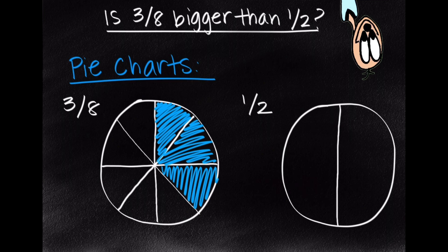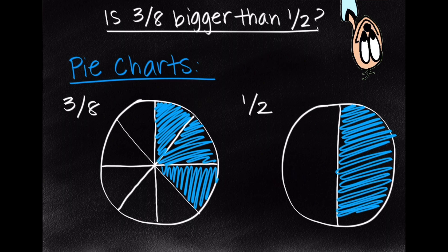Whereas 1 half, we only have one out of the two parts, so we're going to color in one of our two slices, one of our two wedges. And this very easily allows us to see that 1 half is greater than 3 eighths. We can see that more of the pie is shaded in for 1 half than it is for 3 eighths.